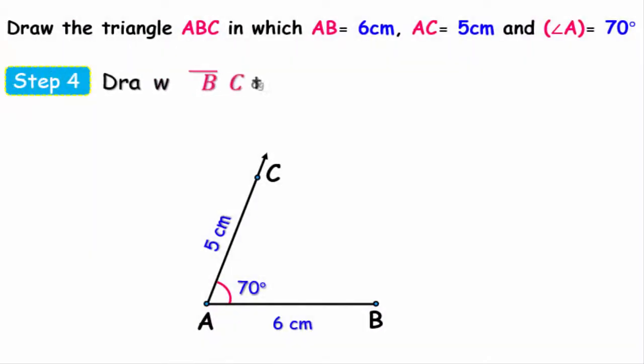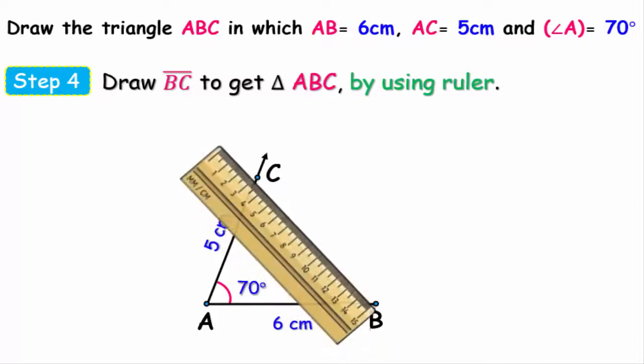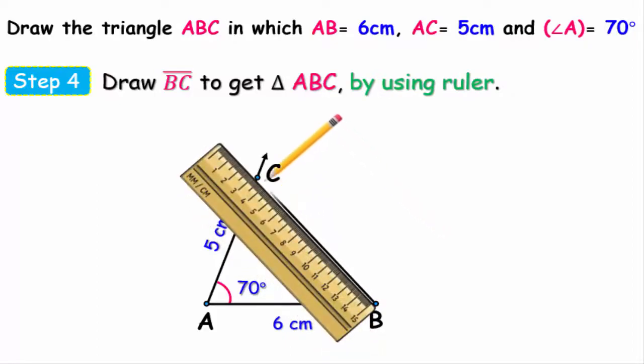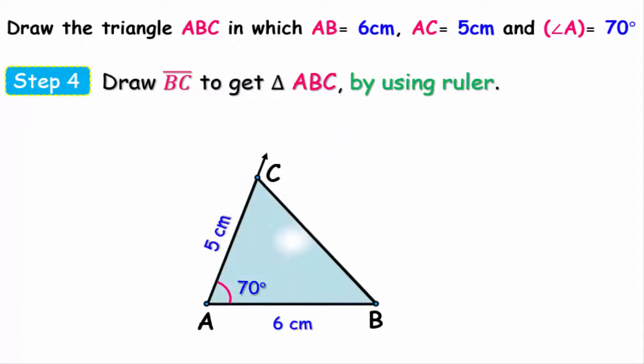Now we arrive to our last step, that is draw the line segment BC to get the triangle ABC whose side length AB equals 6 centimeters, AC equals 5 centimeters and the measure of angle A equals 70 degrees.